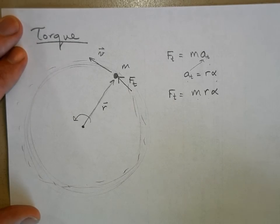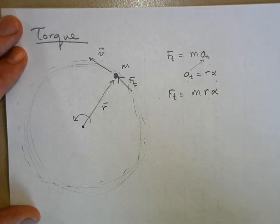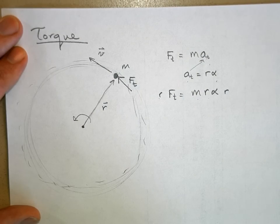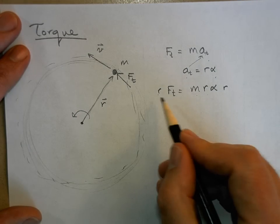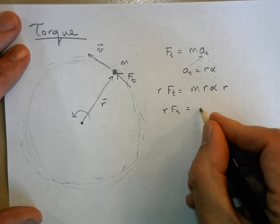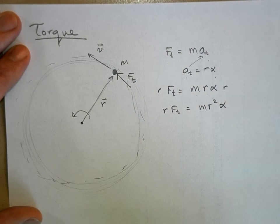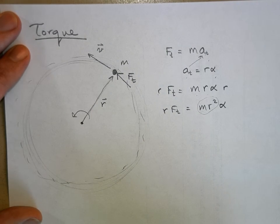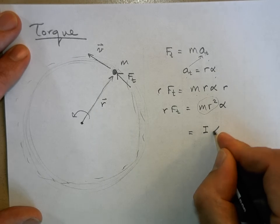This is algebra, and as long as I do one thing to one side and do it to the other side, it's fine. So I'm going to multiply both sides by r. That gives me r times F tangential equals m r squared times alpha. Well, m r squared is I, so this becomes I times alpha.